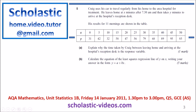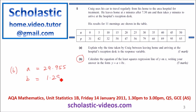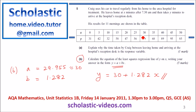Then we look at Part B: calculate the equation of the least squares regression line of Y on X. We put the calculator into regression mode — you can find regression mode by going into the mode of the calculator and enter the values. Once we enter these values, we get A equal to 29.955 and B equal to 1.282. We can approximate A to 30, so we write Y equal to 30 plus 1.282X.